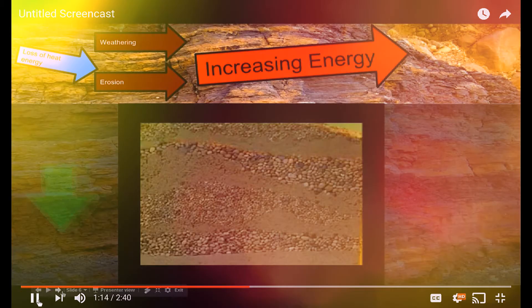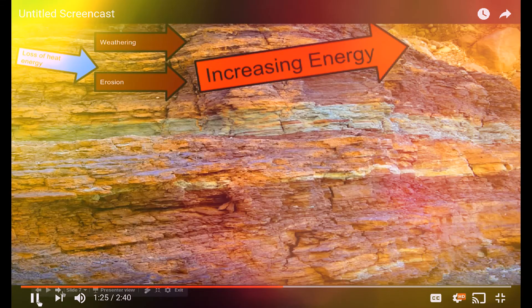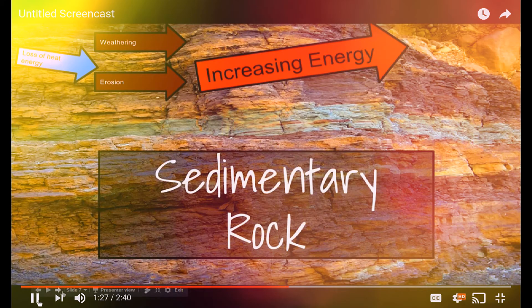This downward pressure will actually cause a compaction and cementation process where the little grains of sediment will actually stick together and form a new kind of stone. This new kind of rock is known as a sedimentary rock. As you can see here, there's layers and layers and layers of it that have all been pressed together until they form a rock themselves.